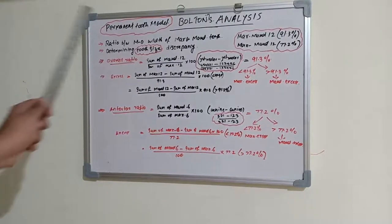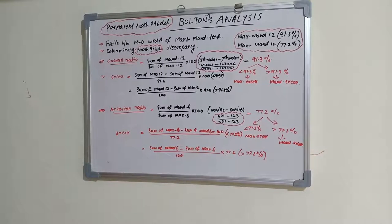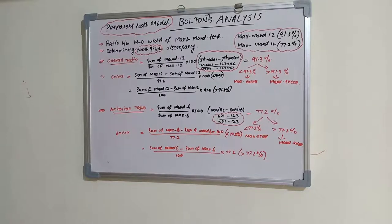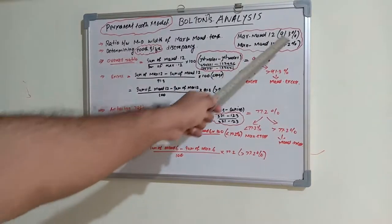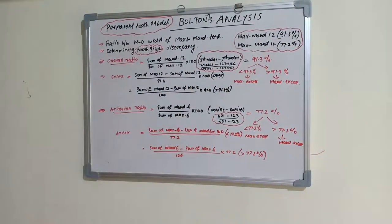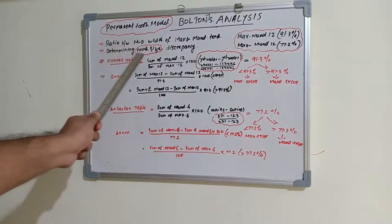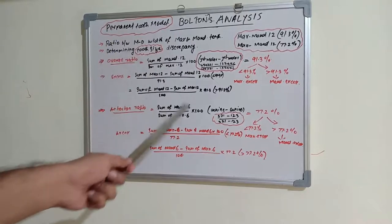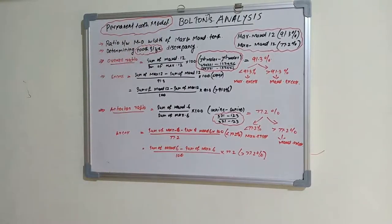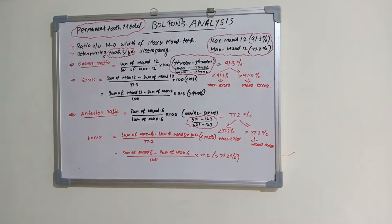Bolton's analysis is a ratio between the mesiodistal width of maxillary and mandibular teeth. Bolton calculated a constant proportion and found that a constant proportion is present between upper and lower dentition when the occlusion was perfect. That proportion is 91.3% and 77.2%. It is actually determining the tooth size discrepancy between the mandibular and maxillary teeth by checking their mesiodistal widths.